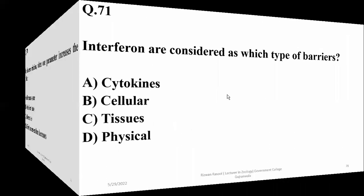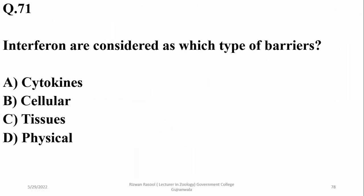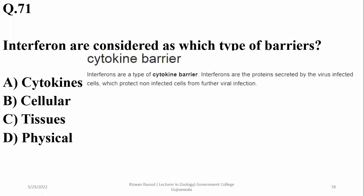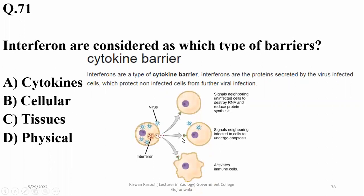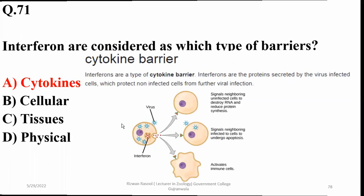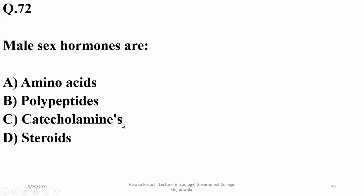Question 71: interferons are considered which type of chemical? They are local chemicals that help communication between white blood cells and lymphocytes — cytokines. Interferons are proteins secreted by virus-infected cells and signal other cells for various purposes. The right option is alpha. Question 72: male sex hormones are androgens and are of steroid nature, so the answer is delta.